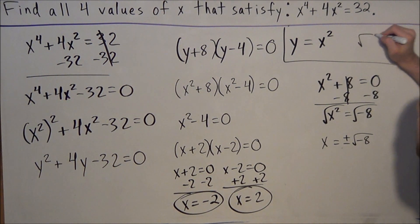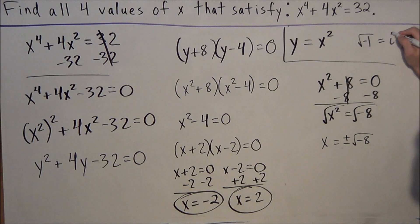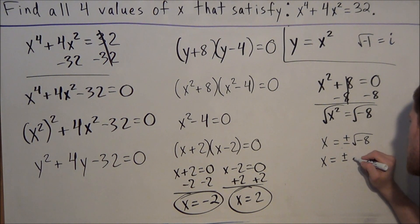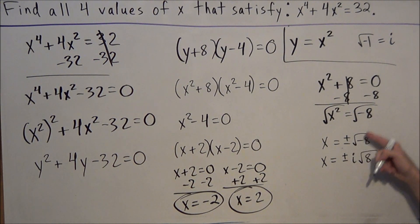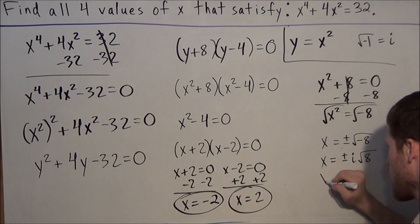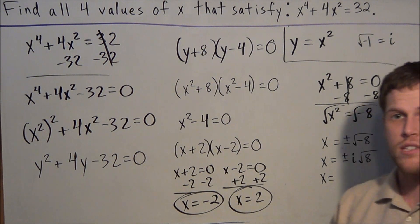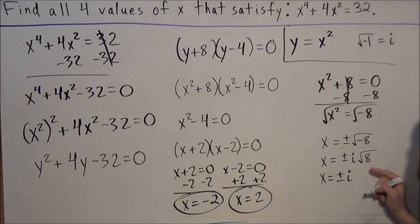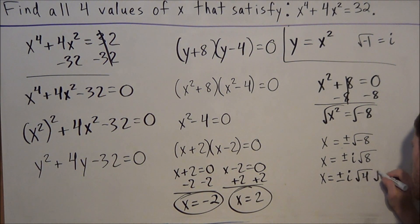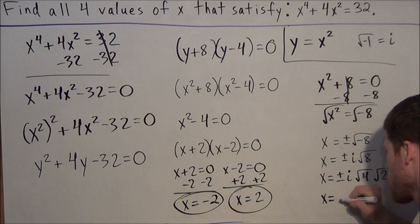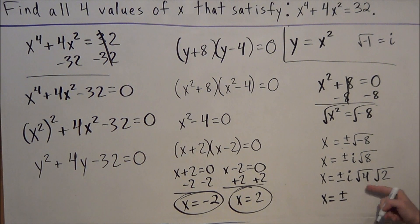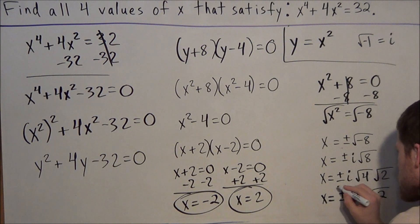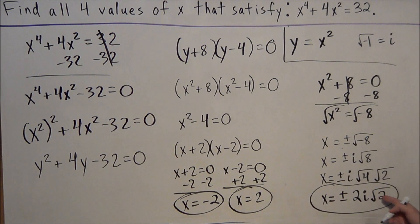One thing to consider with imaginary numbers: the square root of negative 1 equals i. So we write this as x equals plus or minus i times radical 8, bringing the negative out as the term i. Our answers should never be left unsimplified, and radical 8 can be broken down. So we have plus or minus i times radical 4 times radical 2, which gives us plus or minus 2i radical 2, since the square root of 4 is 2. Radical 2 will not simplify because it's irrational.